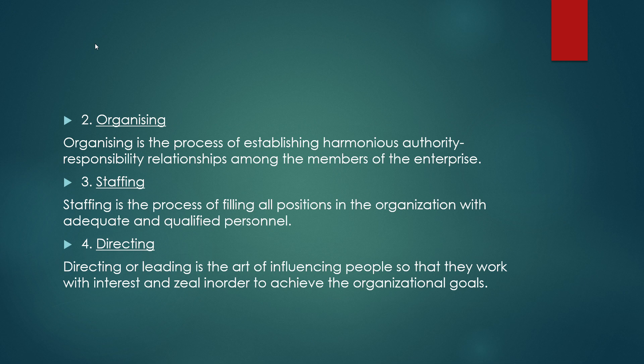Once plans are formulated, the next step is organizing. Organizing is the process of establishing harmonious authority-responsibility relationships among the members of the enterprise. The network of authority-responsibility relationships is known as organization structure. The process of organizing involves determining and defining activities required for achieving planned goals, assigning duties to specific positions, and delegating authority so that the work is carried out as planned.